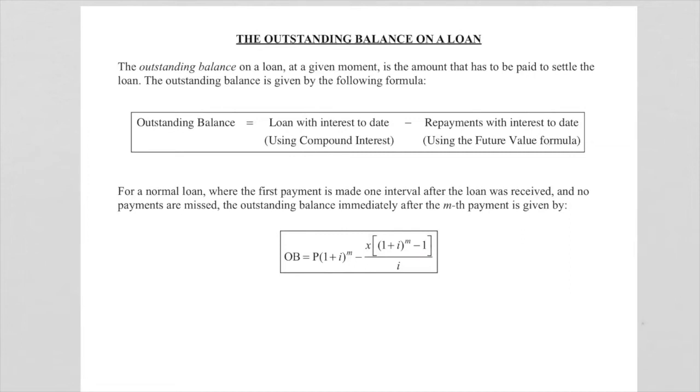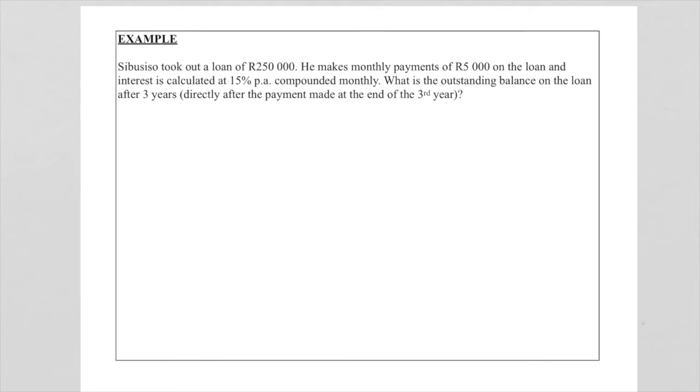So let's now look at an example to illustrate this. In this example, Sibusiso took out a loan of 250,000 rand. He makes monthly payments of 5,000 rand on the loan and interest is calculated at 15% per annum compounded monthly.